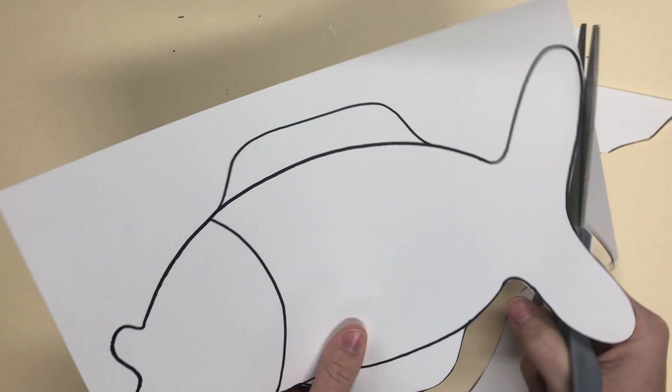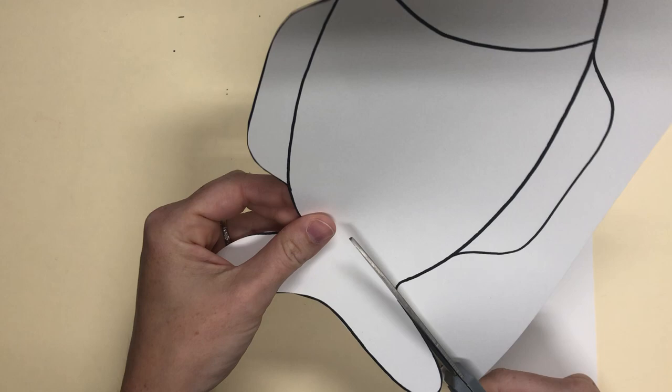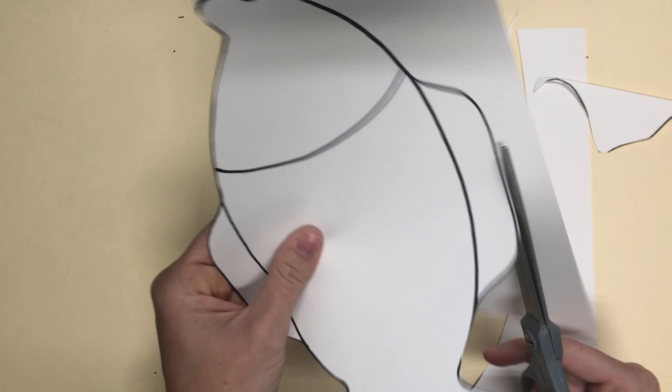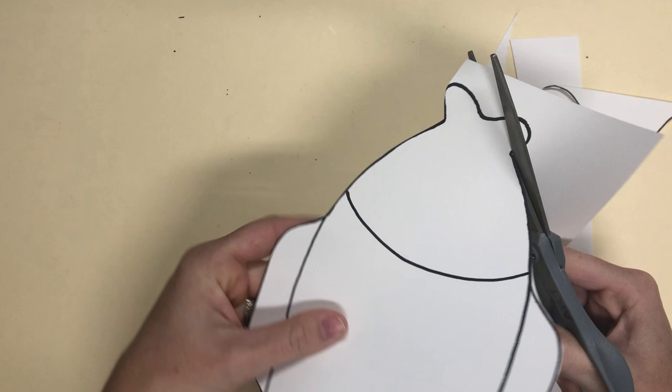If you've ever made a peanut butter and jelly or maybe you've watched someone at home make a sandwich, you know that there's two pieces of bread that fit together so nicely. That's because they're the same shape, just like our little fishies are going to be the same shape.